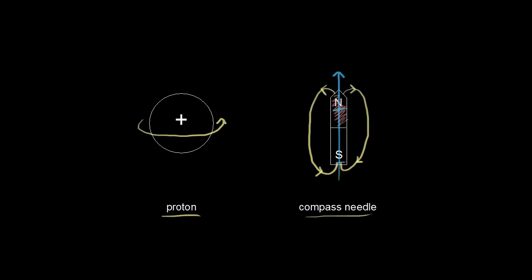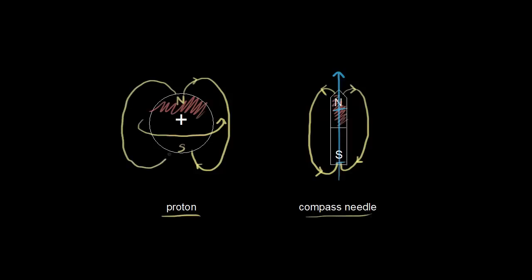Using this same idea, we can go back to the proton and think about it like a compass needle. If it's spinning this way, it's going to have a north pole and a south pole. We can draw magnetic field lines going from the north pole to the south pole, and draw in the magnetic moment of the proton — pointing in the direction of the dipole's magnetic field. This is how we think about a proton: as a tiny magnet with a magnetic moment.